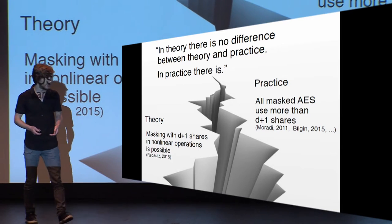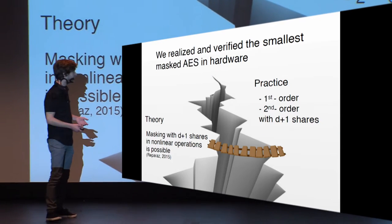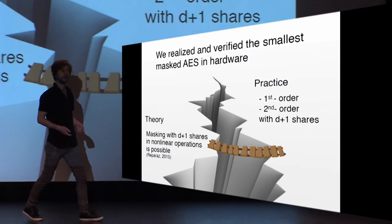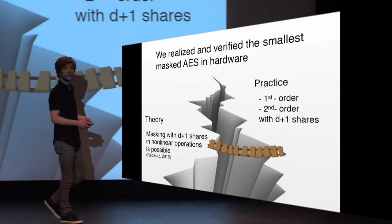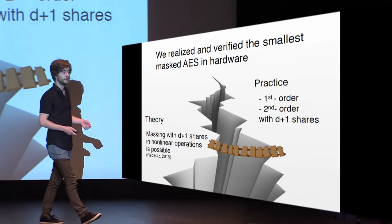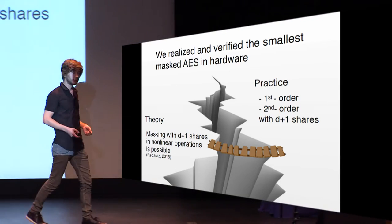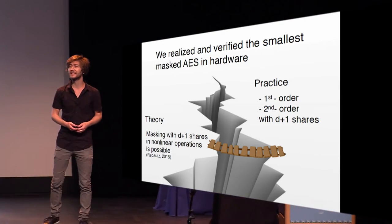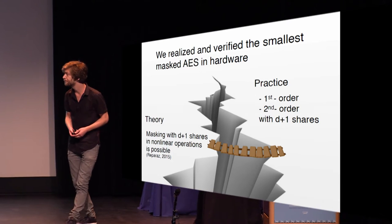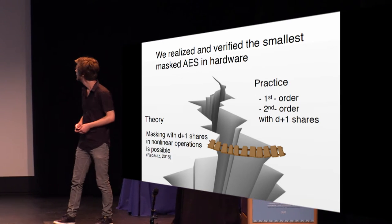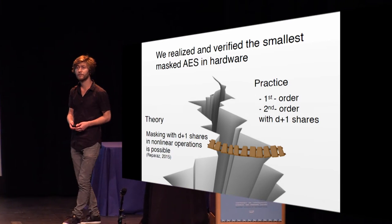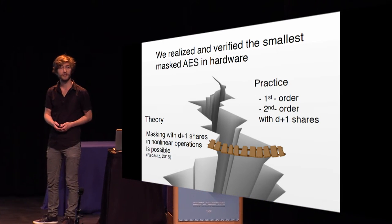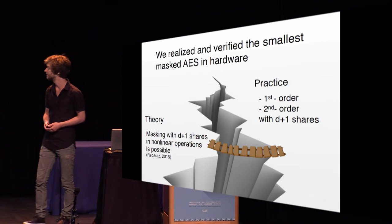So in this work we bridge this gap and we provide the smallest masked AES implementation. We also verify them for both the first and the second order, and both our implementations use the minimum number of shares, which is D plus one.